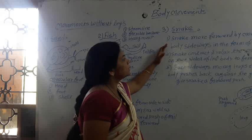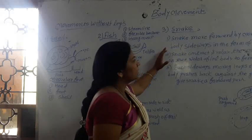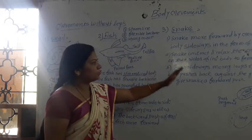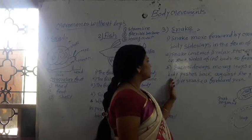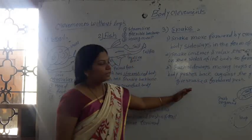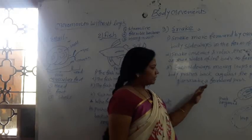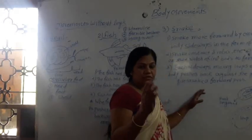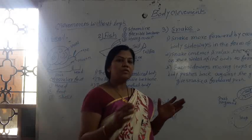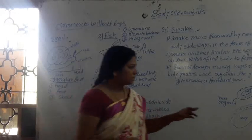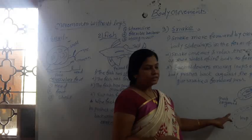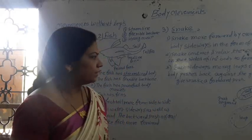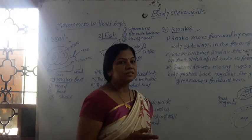Here are some features of the snake. Snake moves forward by moving its body sideways in the form of loops. Snake contracts and relaxes the muscles on two sides of its body to form the loops. Each sideways-moving loop of the snake's body pushes back against the ground and gives the snake a forward push. It forms an S-shaped loop in a zigzag manner. The many small muscles attached to the backbone help the snake to move easily.